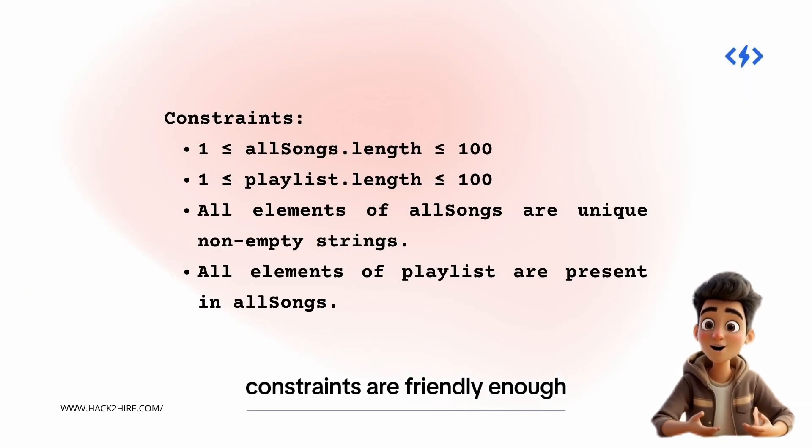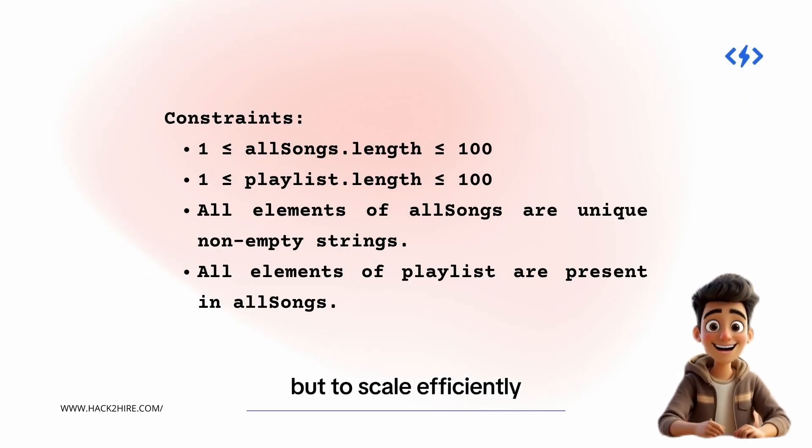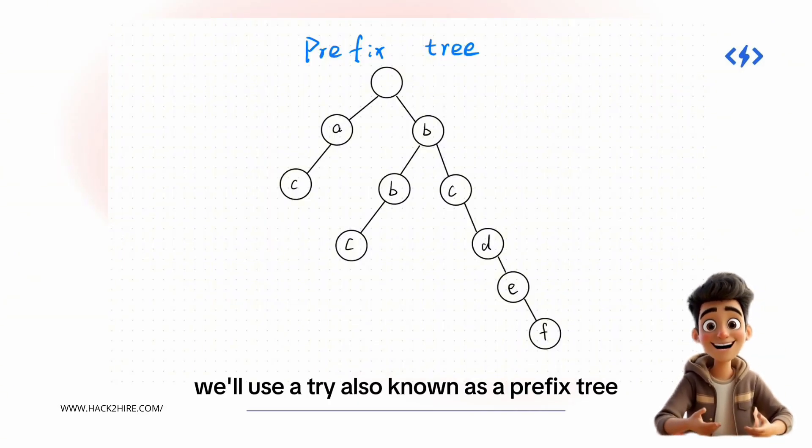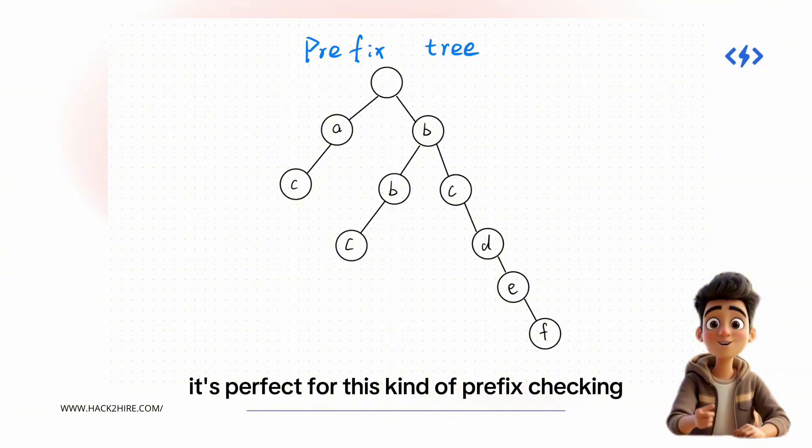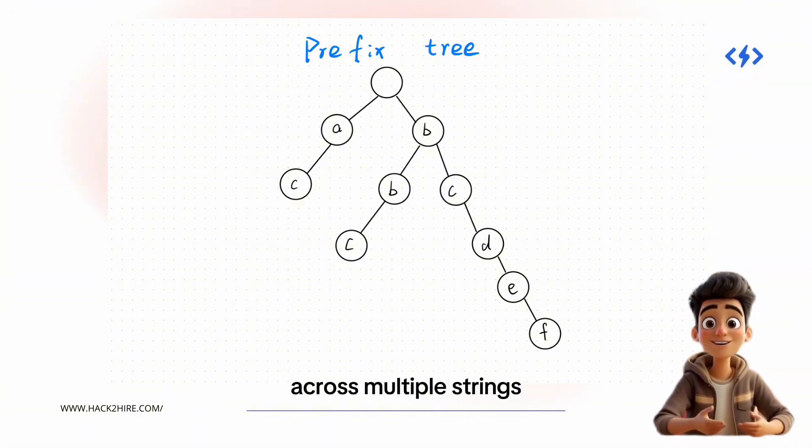Constraints are friendly enough, but to scale efficiently, we'll need a smart data structure. We'll use a trie, also known as a prefix tree. It's perfect for this kind of prefix checking across multiple strings.